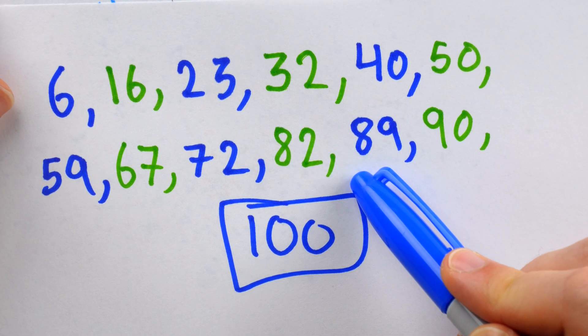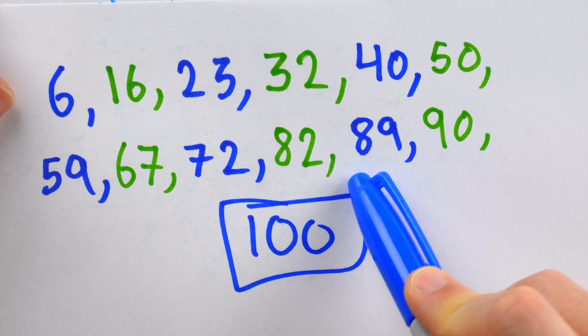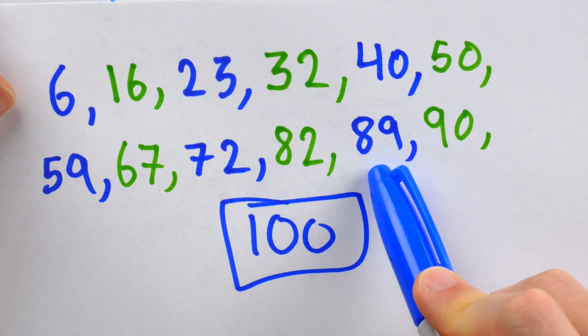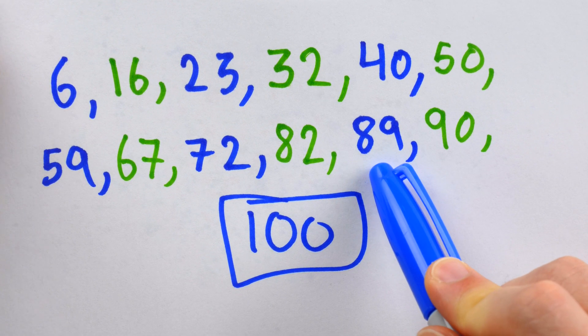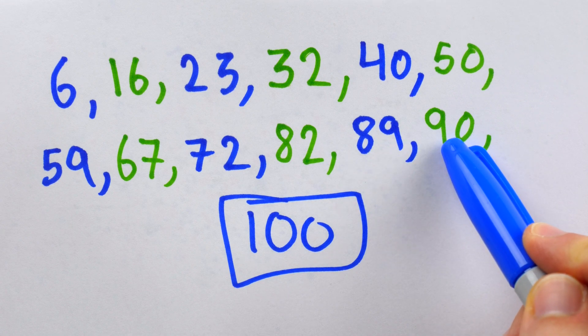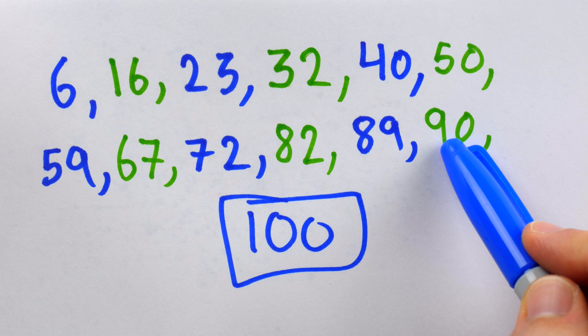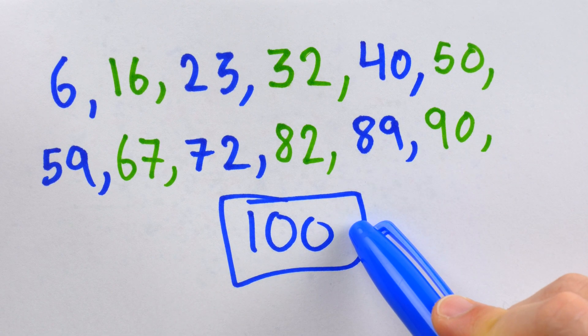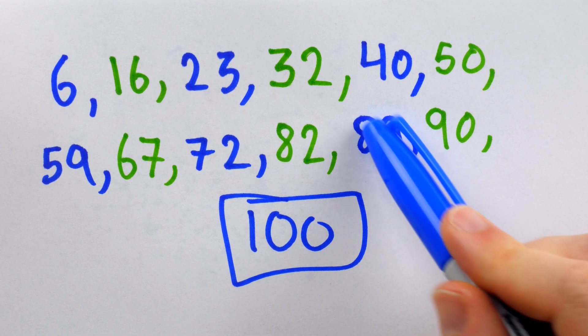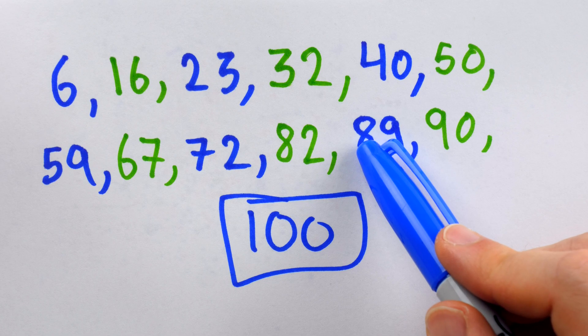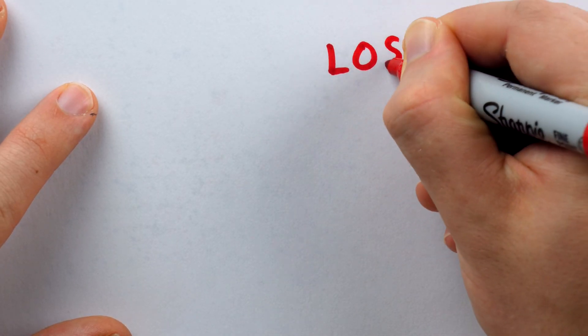So, here we see that 89 is for sure a losing position. If it's your turn and 89 is the current subtotal, then the least you could make it is 90 if you add 1, and the most you could make it is 99 if you add 10. But either way, the next player will be able to win on their turn. So, 89 is for sure a losing position.